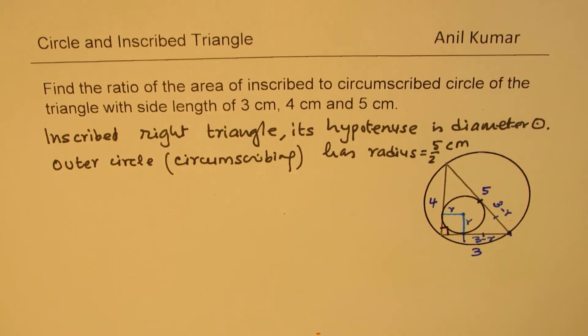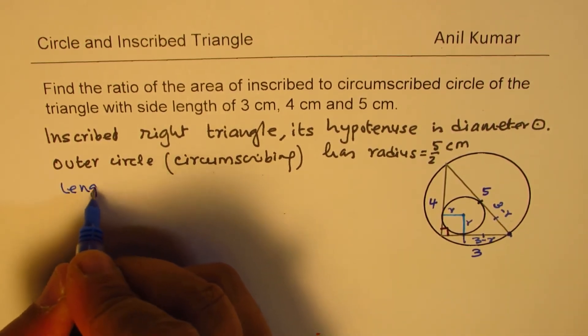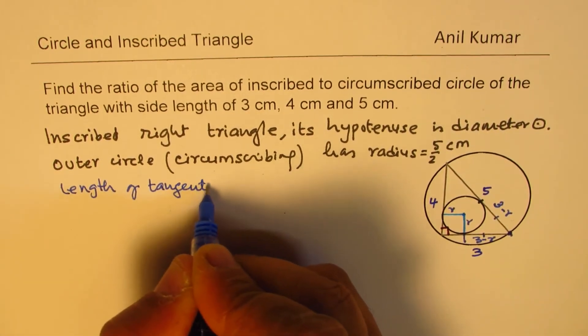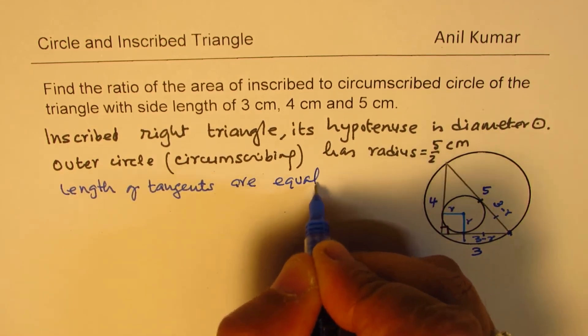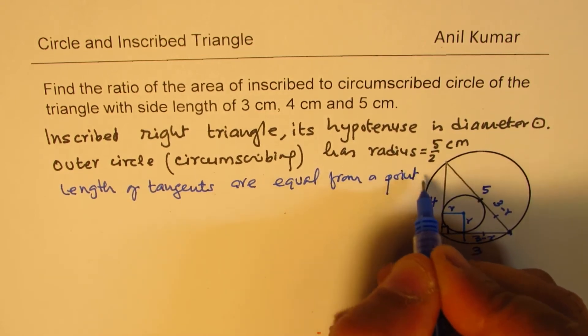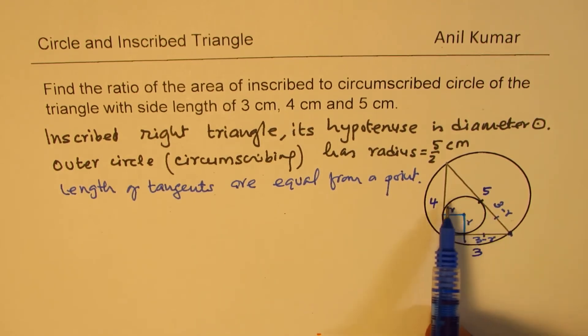So important property to use here is that the length of the tangents are equal from a point. So from this particular point, both the lengths are equal and we found that since the circle of radius small r is inscribed, the length should be 3 minus r.